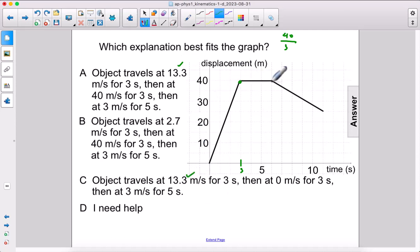Alright, for the next three seconds, we don't move at all. So our displacement has not changed. We haven't traveled any distance. The slope of this line is zero. So we are traveling at zero meters per second. So the answer is C.